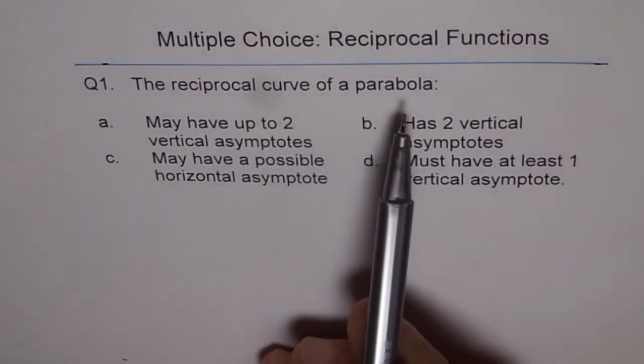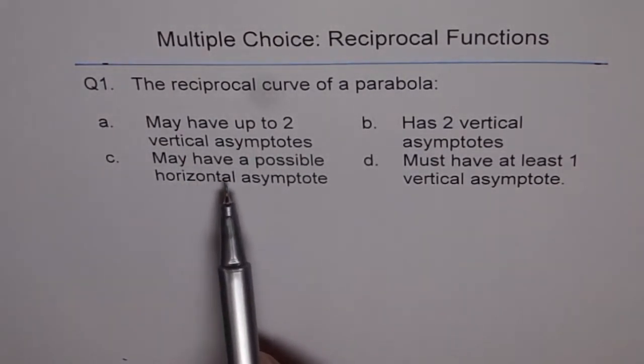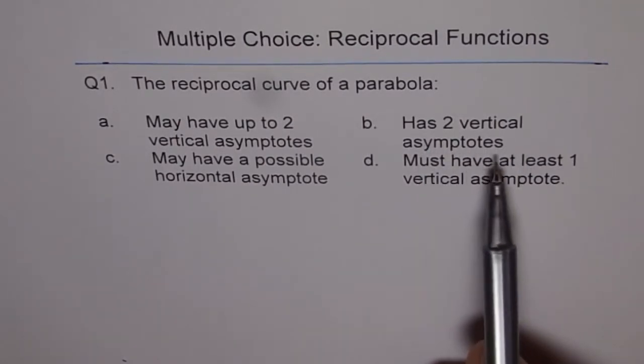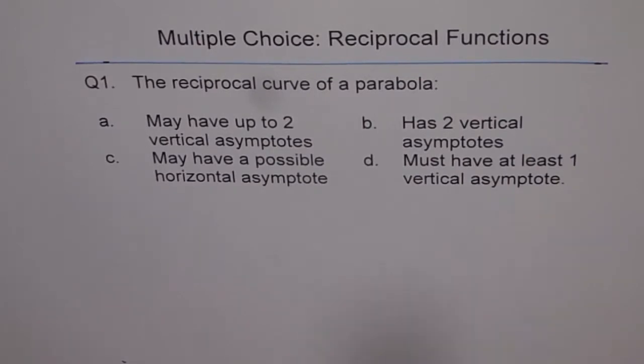of a parabola: may have up to two vertical asymptotes, may have a possible horizontal asymptote, has two vertical asymptotes, or must have at least one vertical asymptote. These are different combinations and some of them seem to be true.